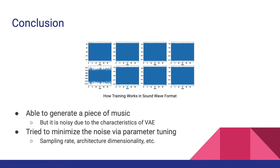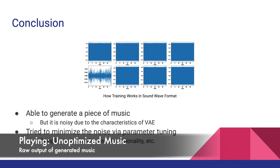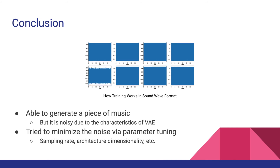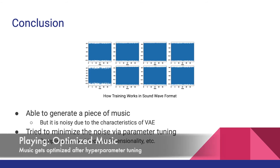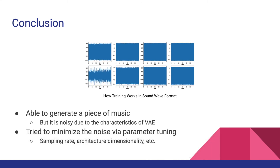We applied the VAE architecture to our input — before we incorporated our tuning strategies, it generates music with noise due to the characteristics of VAE, and we tried to minimize the noise through hyperparameter tuning. After the optimization, the generated music improves noticeably. The image up here shows how the training process went, and there are the output sound waves.